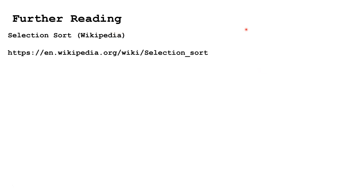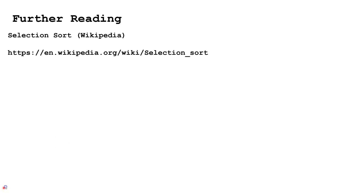For further reading on the selection sort, please type 'selection sort Wikipedia' into Google and choose the first result, or go to this web address. To see the next video in this curriculum, please click on the link in the lower left-hand corner of the screen. To see the entire curriculum, please click on the video link in the lower right-hand corner of the screen.